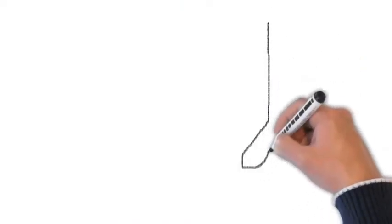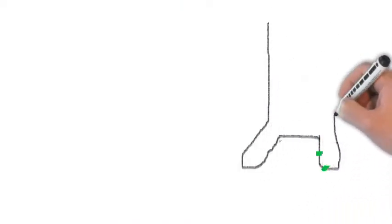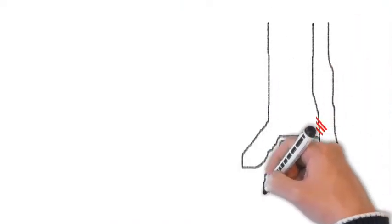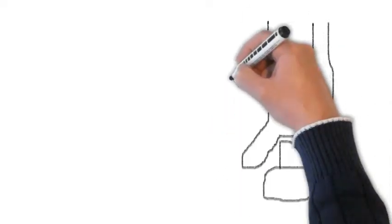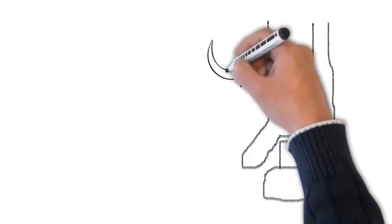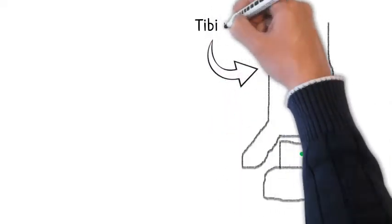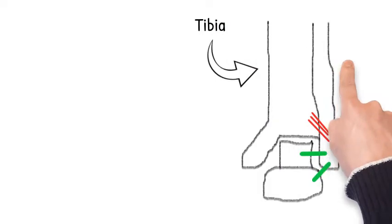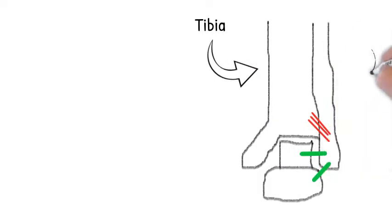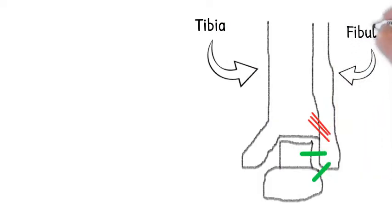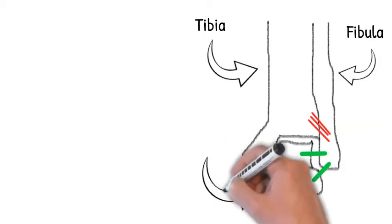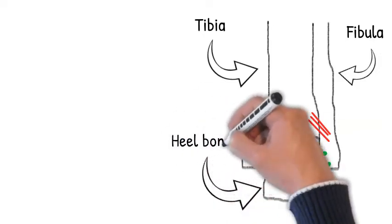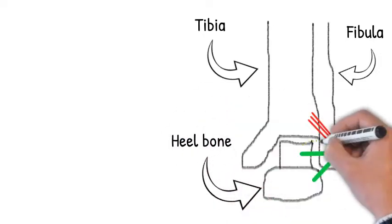We're going to explain what those ligaments are that are injured by drawing one of these diagrams again. This is what your ankle looks like from the front — the bones and the ligaments. The first bone we're labelling is the tibia, or your shin bone. The bone next to it is called the fibula; it takes about one-eighth of your weight when walking. The bone underneath is your heel bone, which looks like a circle from the front, and on top of that is a square bone called the talus.